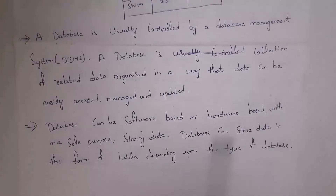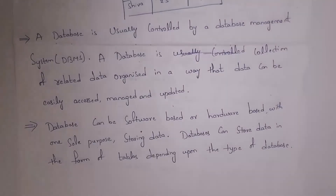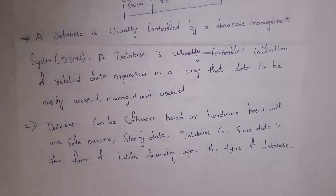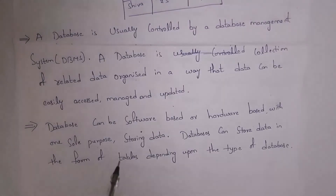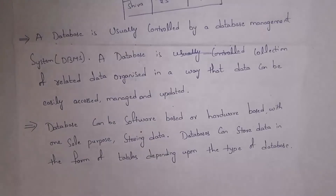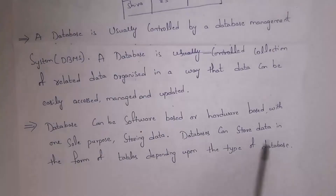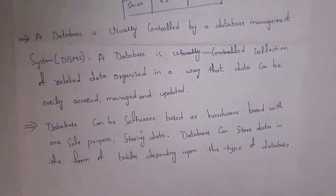A database can be software-based or hardware-based, with the sole purpose of storing data. To create a database or insert data, we need database software, and to store data we need a hard disk, which is an example of hardware. Databases can store data in the form of tables, depending on the type of database.